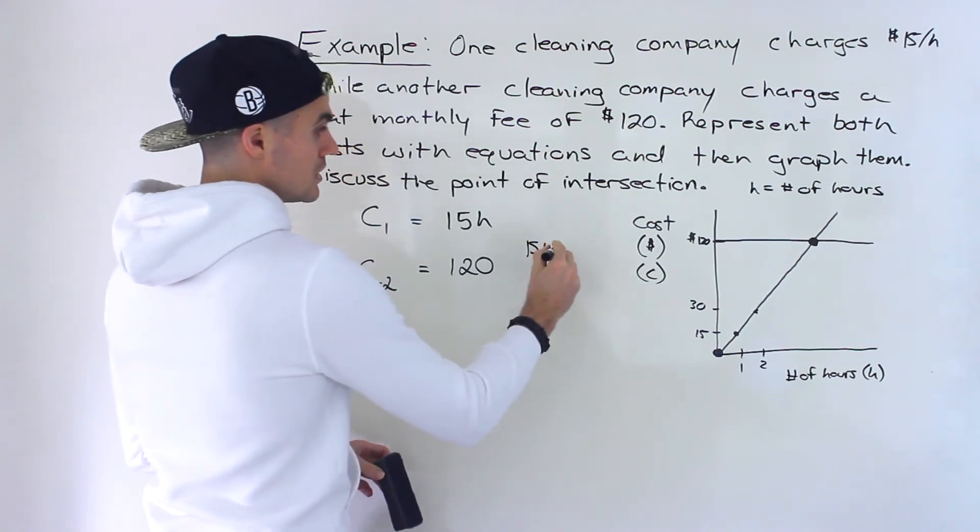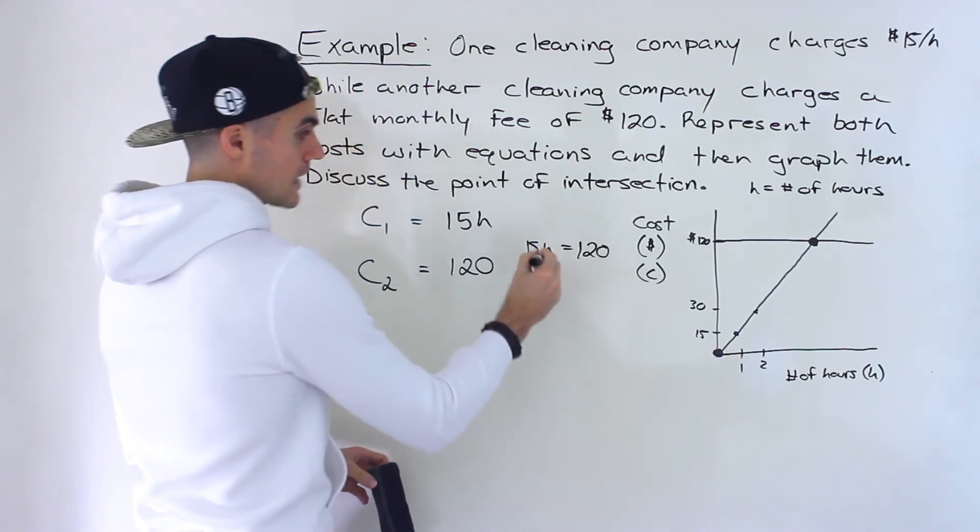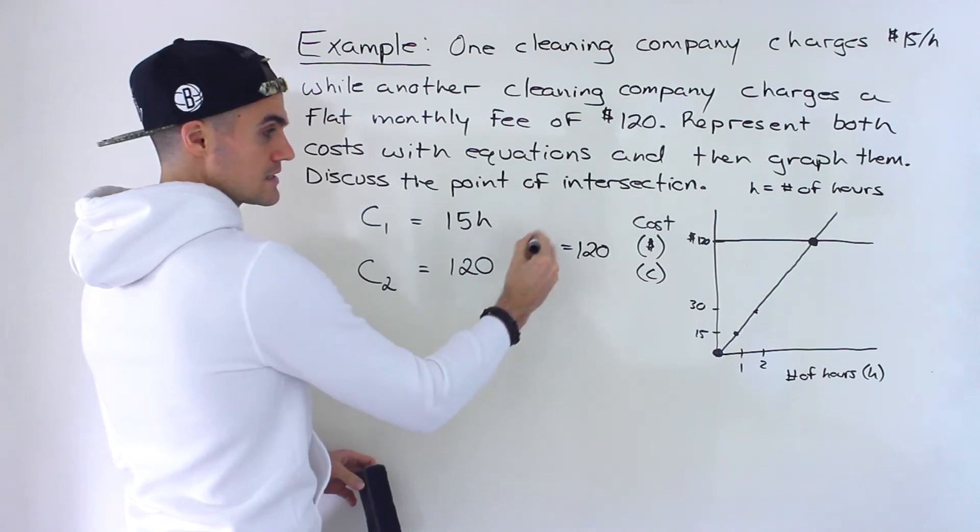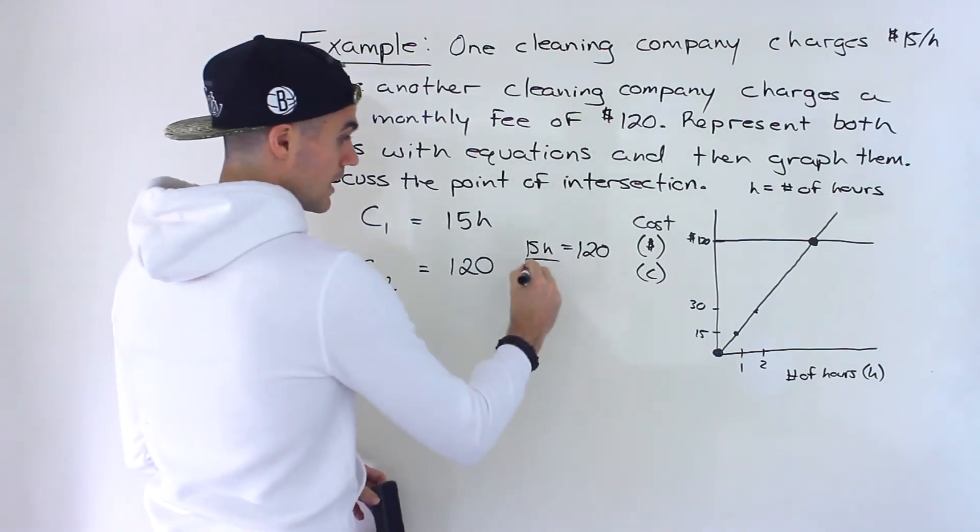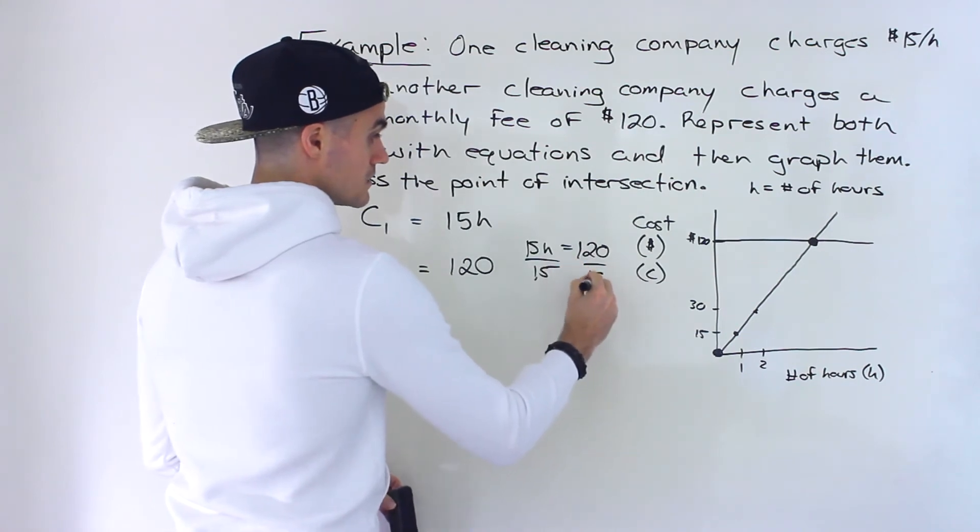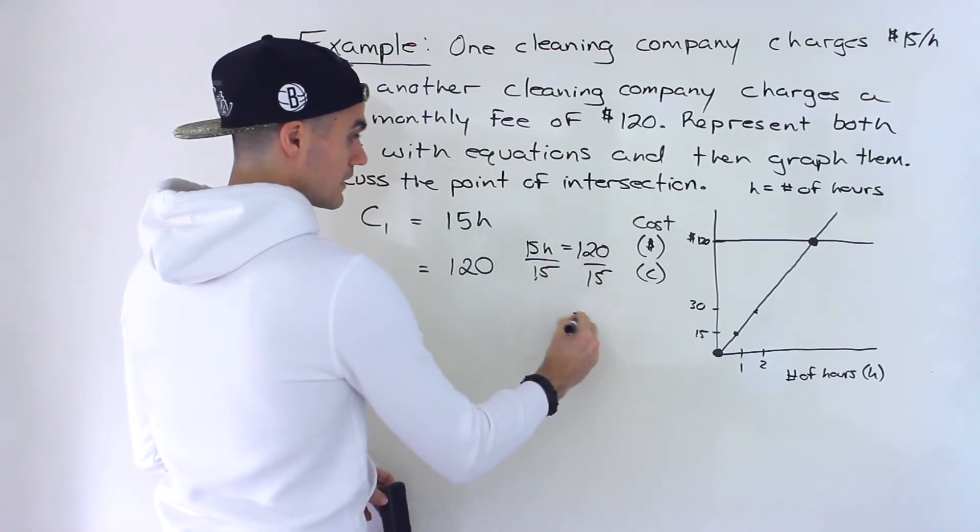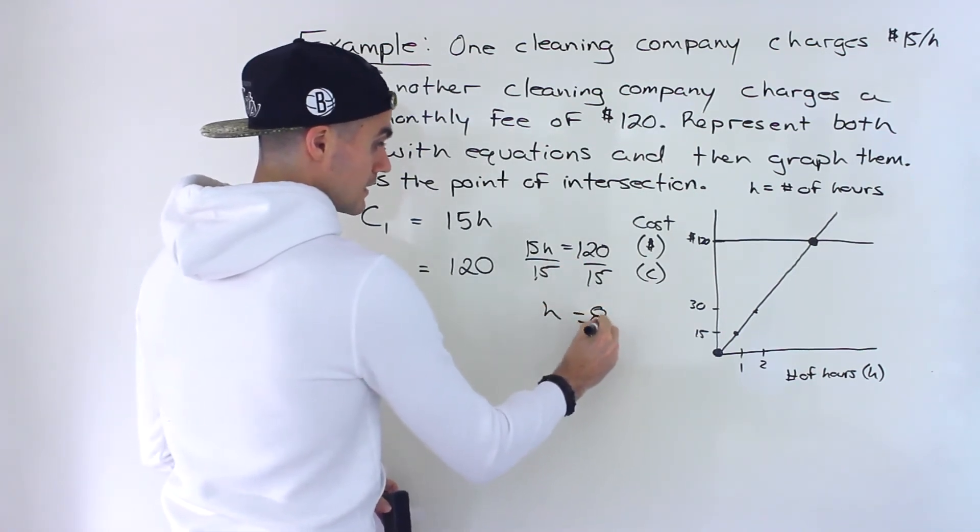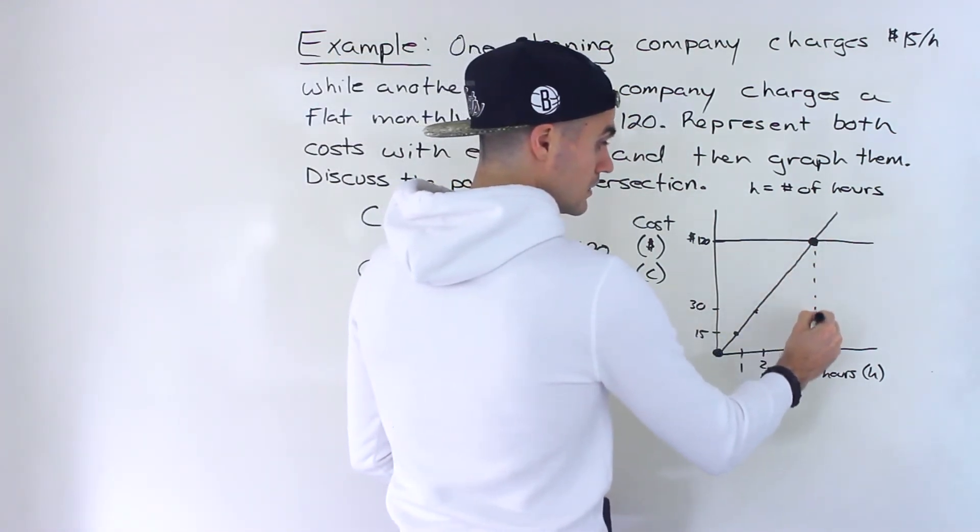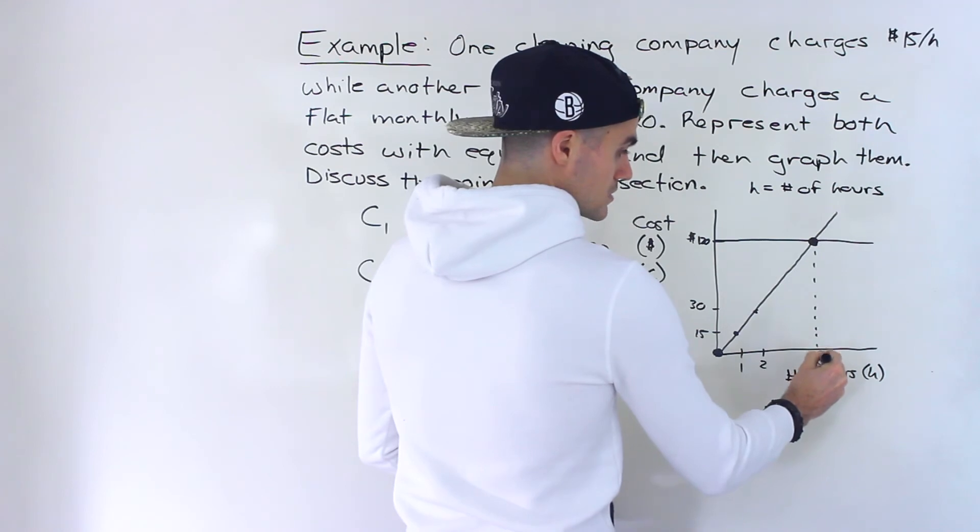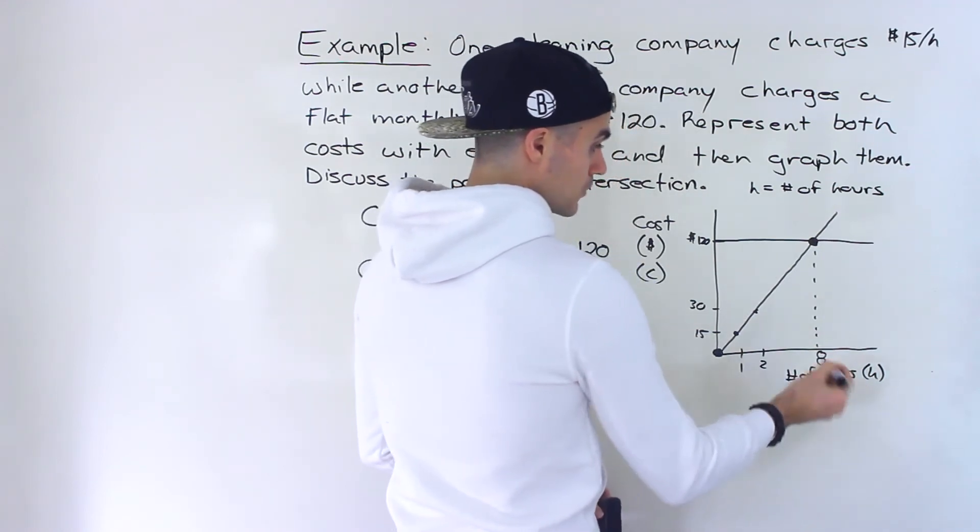So you could say 15H is equal to 120. How many hours is it going to take to get to 120? And then from here, you could actually just divide both sides by 15 like that, and you would end up getting eight hours. So this over here, this point is going to intersect at eight hours.